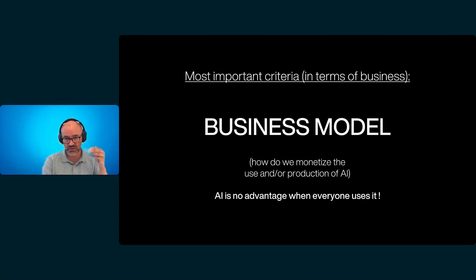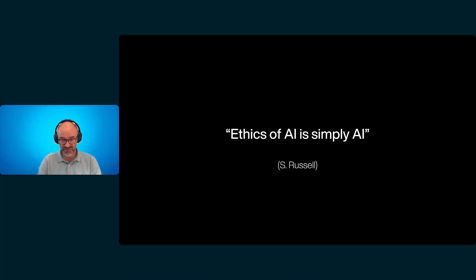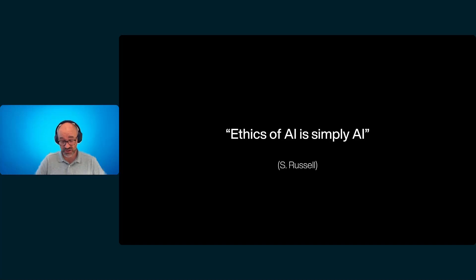Some will ask, what about ethics? Obviously it would be far too long to go into this in detail. But I would answer with Stuart Russell, a very widely known expert in AI who co-wrote with Peter Norvig the most important book on artificial intelligence, Artificial Intelligence: A Modern Approach. Stuart Russell rightly says, ethics of AI is simply AI. Speaking of ethics of artificial intelligence is a far too complex matter that cannot be discussed today.